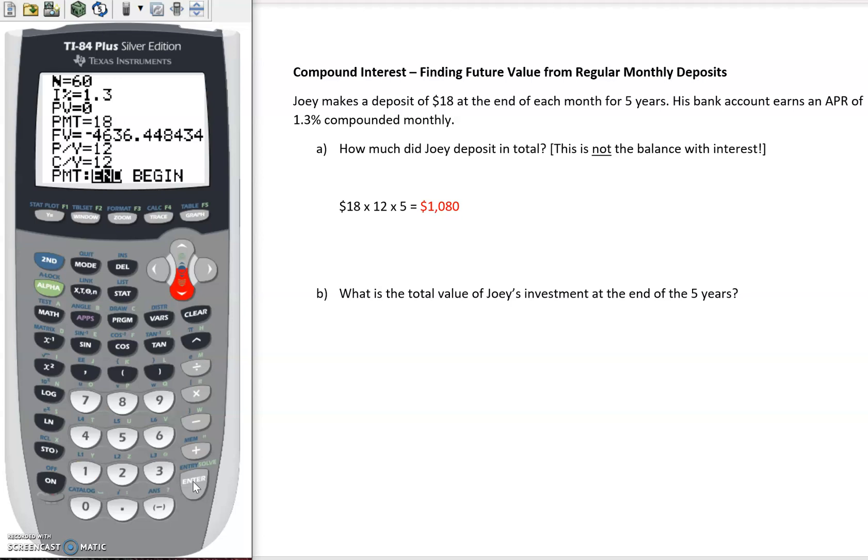So our future value is what we're looking for. We're going to solve for this in just a moment, but it's always a good idea to check these last three. So are payments being made at the end of each month? Yes they are. Same thing with our compounds—they're happening at the end. And because we're doing monthly payments and monthly compounds, these should both be 12.